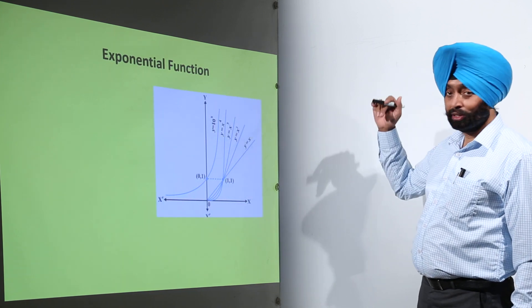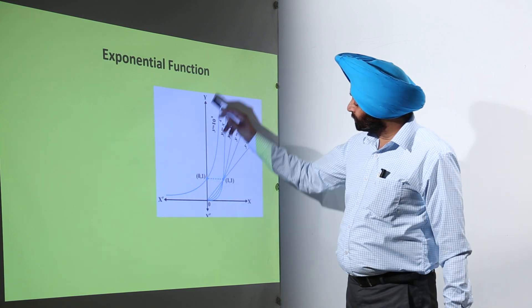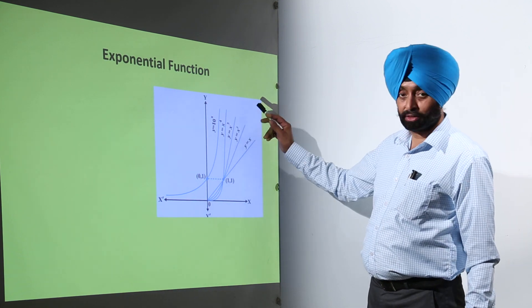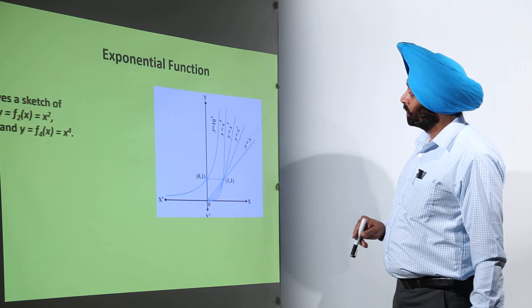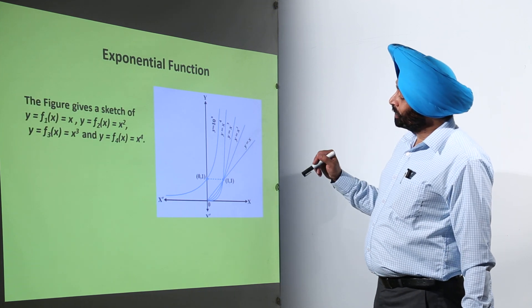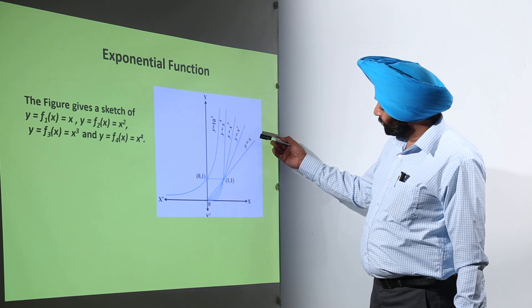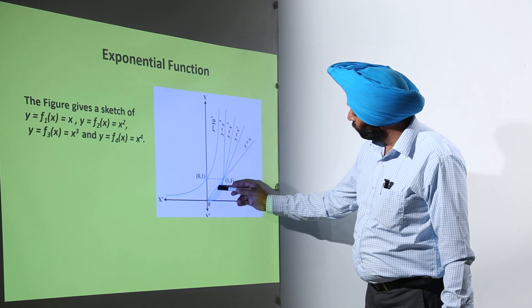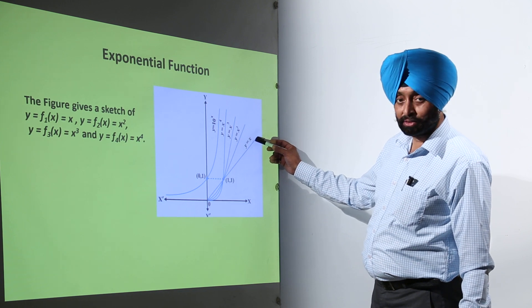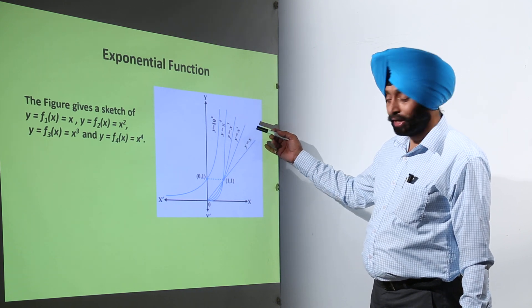Now here a figure has been drawn, x-axis, y-axis, and few curves are there. Now what this is? You can just check it. The figure gives a sketch of y equals f1(x), that is this part. It starts from here and y equals f1(x) and f1(x) equals x.